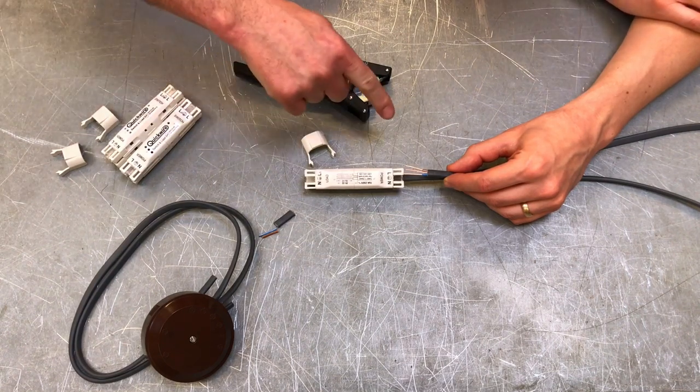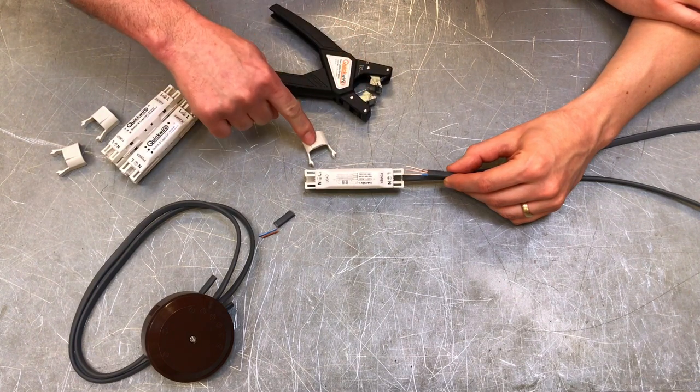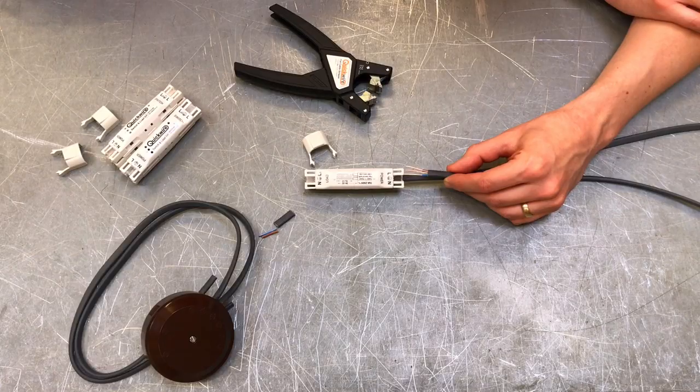So in summary: very quick to connect, very simple to use the stripping tool, and very simple to remove the conductors as well. Solves all the problems of a joint box. Lovely bit of kit.